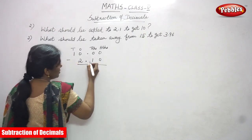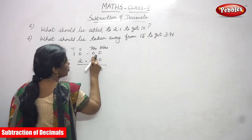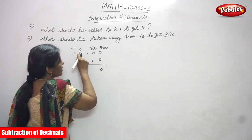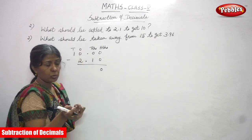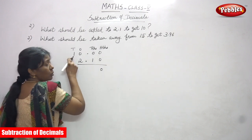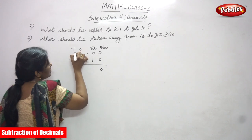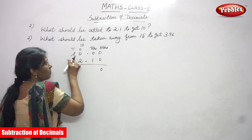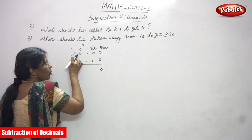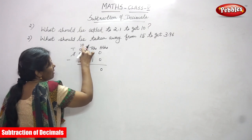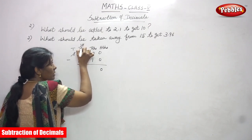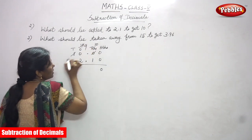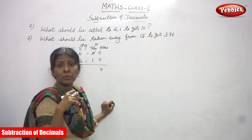Now let's start to subtract. 0 minus 0, you can get 0. There is no number in the 10's place, that is 0, so we have to subtract from the whole part — the 1's place. The 1's place is also 0, so you have to subtract from the 10's place, which also comes under the whole part. So, 1 is in the 10's place. You have to borrow 1 from the 10's. Here it becomes 10, and after borrowing from here, this becomes 9.